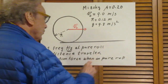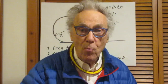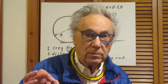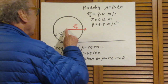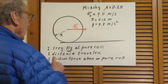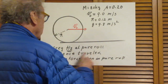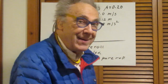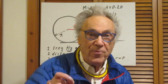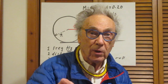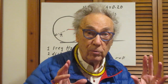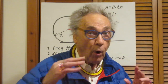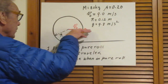And then I want to know: at the moment that it reaches pure roll, what is the distance that it has traveled? So when I say distance traveled, I mean the very moment that it reaches pure roll — I want to know how far it has traveled. And remember, it starts with no spin at all, only a velocity.